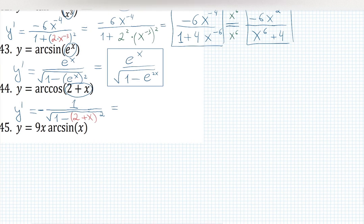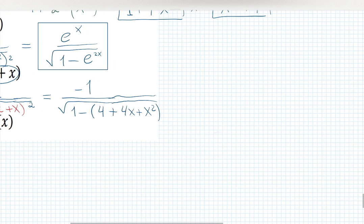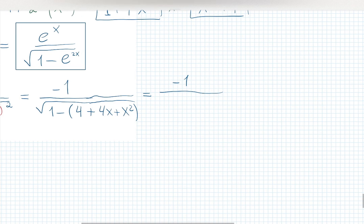But I can see that we can simplify this answer by writing down negative 1 over 1 minus and now use the formula of the square of sum. Square the first term plus double product of the first and second term plus square the second term. Distribute the negative sign and simplify. Negative 1 over 1 minus 4 becomes negative 3 minus 4x minus x². And this is the answer.